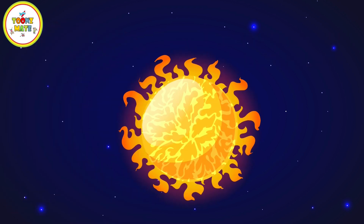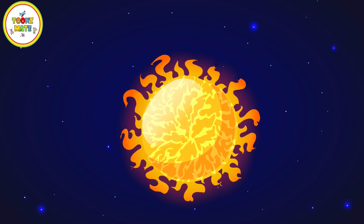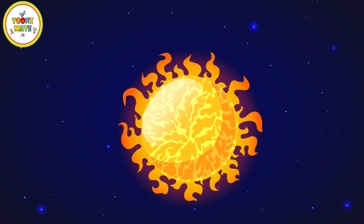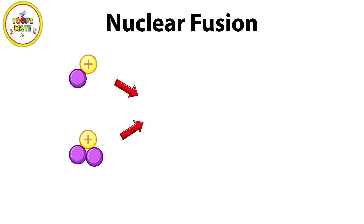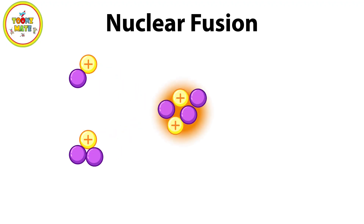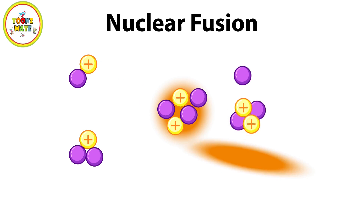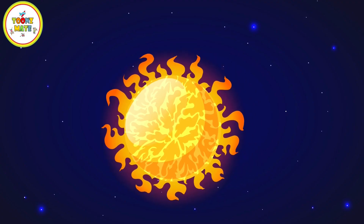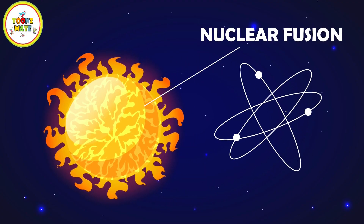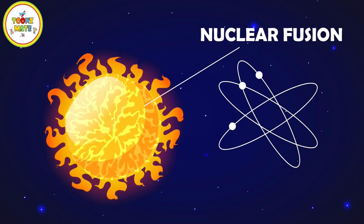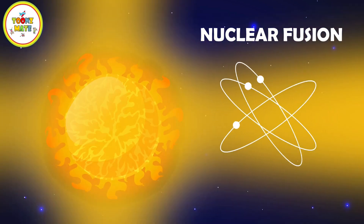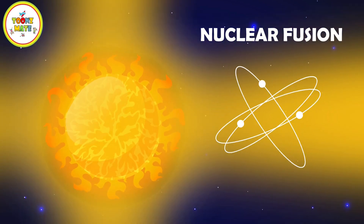The Sun's energy is generated through a process called nuclear fusion. In its core, hydrogen atoms fuse together to form helium, releasing vast amounts of energy in the form of light and heat.